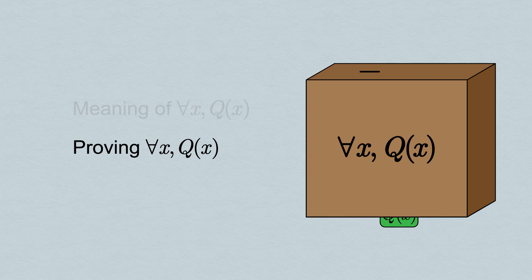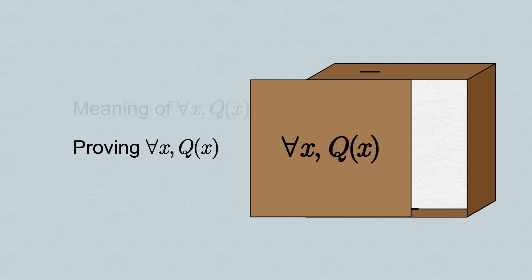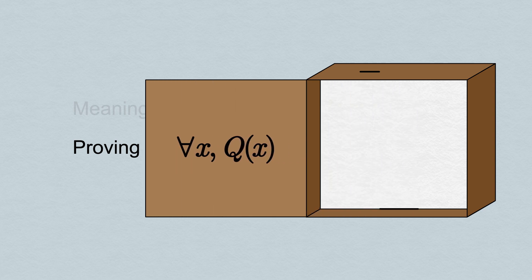Let's see what needs to happen inside the box to make this transaction happen, and how we express that in writing to produce a direct proof of the statement.